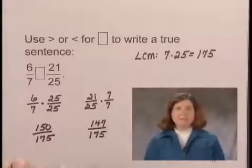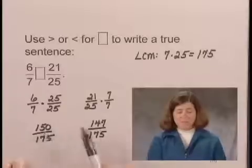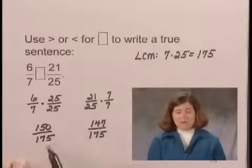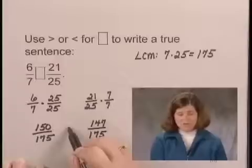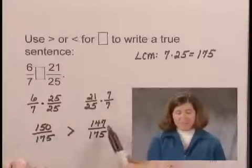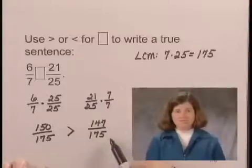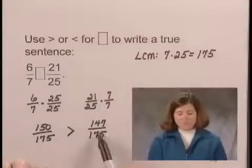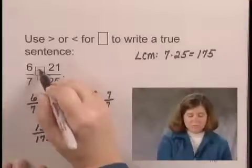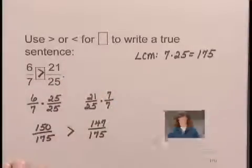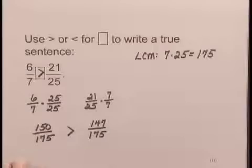Since 150 is greater than 147, and the denominators are the same, 150 over 175 is greater than 147 over 175. But these two fractions are equivalent to the fractions we began with, so 6/7 is greater than 21/25.